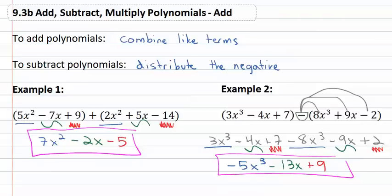Again, to add polynomials, we simply combine like terms and then to subtract the polynomials, we have to first distribute the negative and then combine like terms.